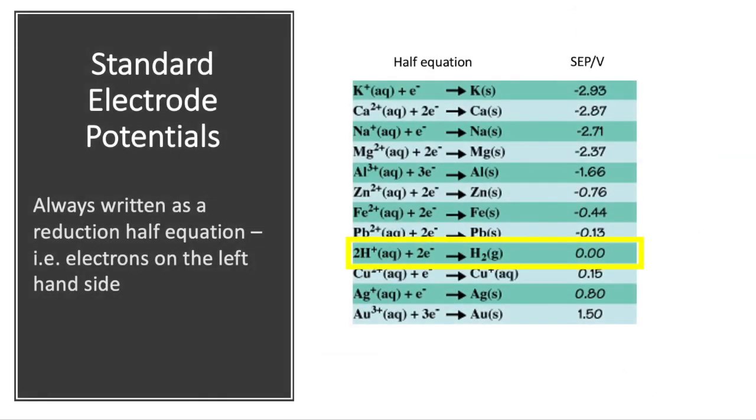So we can always write these standard electrode potentials as a half equation. And here's a table. And you can see hydrogen I've highlighted there as being zero. Potassium you can see relative to that hydrogen as being zero. So if we compare that to zero is minus 2.93 volts.